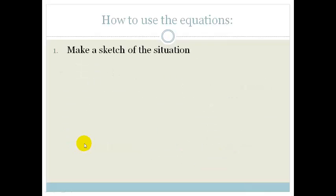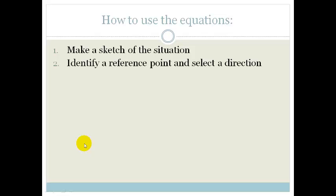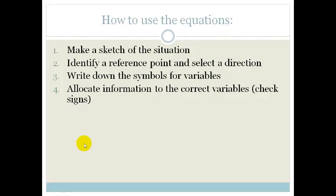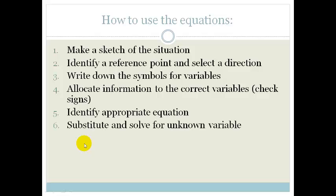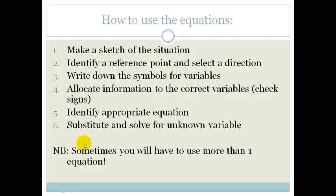Let's go through an example. First of all, we need to make a sketch of the situation — if they don't give you a sketch, draw one. You don't have to be an artist. You need to have an idea of what's going on. You need to identify a reference point and select a direction, because we're working with vectors. Write down the symbols of the variables and allocate the information you already have. Then identify the appropriate equation, substitute, and solve for the unknown. Sometimes you may have to use more than one equation.